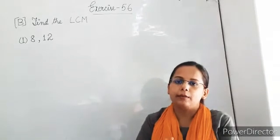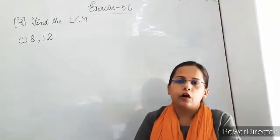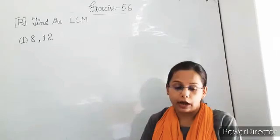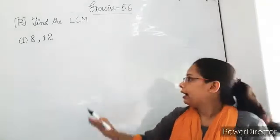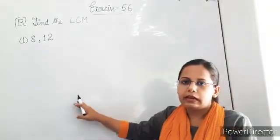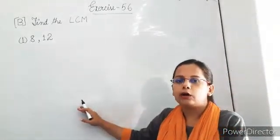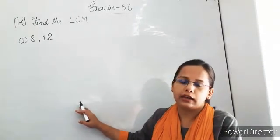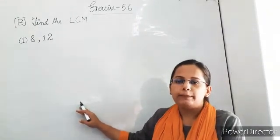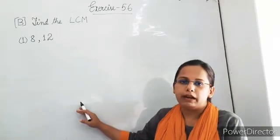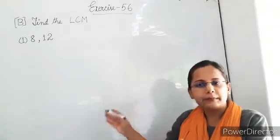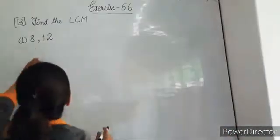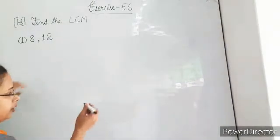So how to find out the LCM? I am going to tell you now — the same steps as you have seen to find out the common multiple. Now from the common multiples, we find out the lowest common multiple. Same steps, not too tough. First, find out the multiples of 8 and 12.